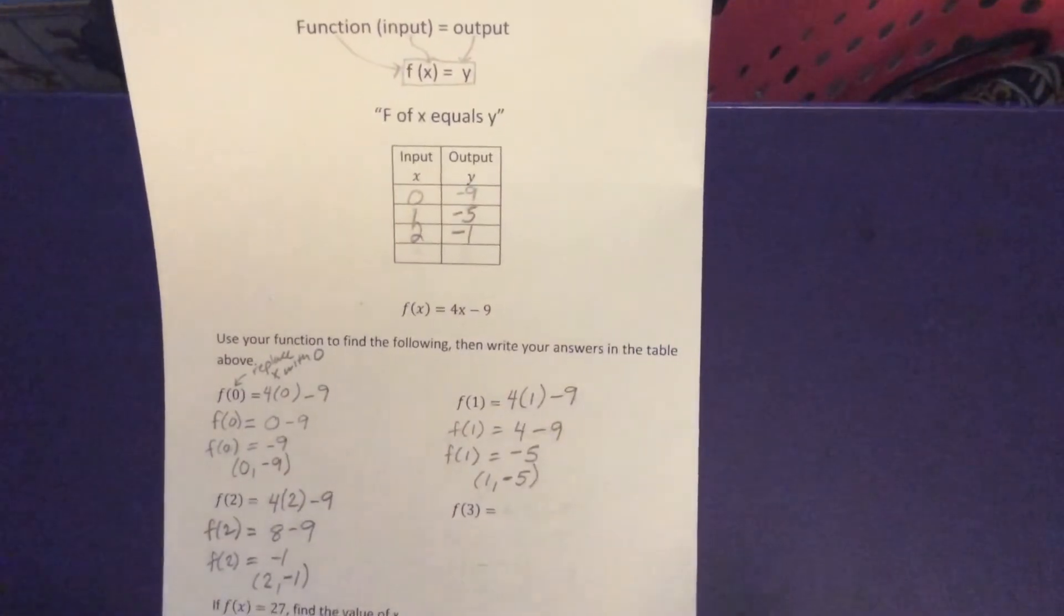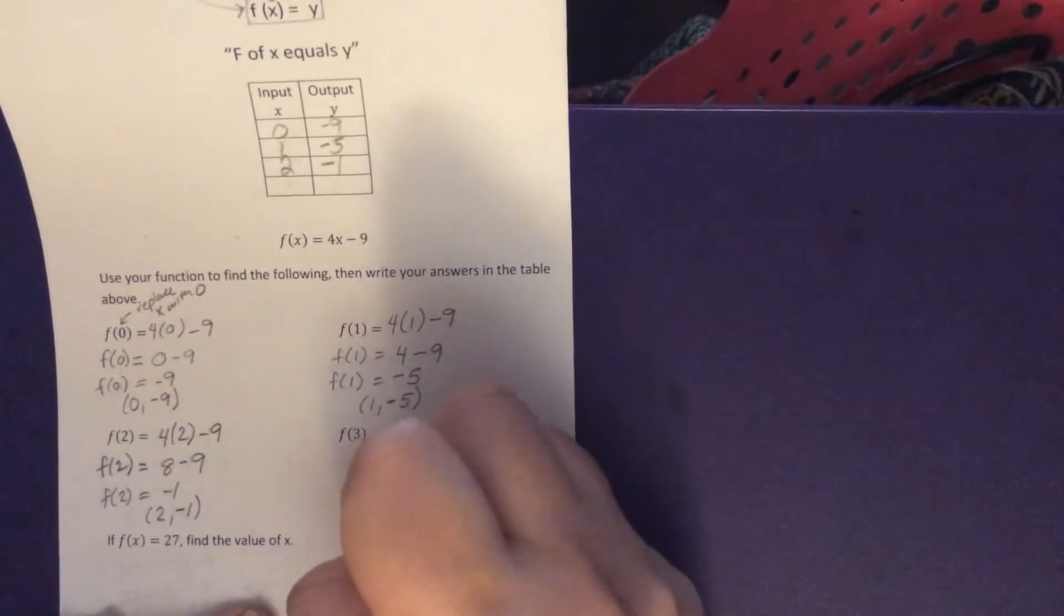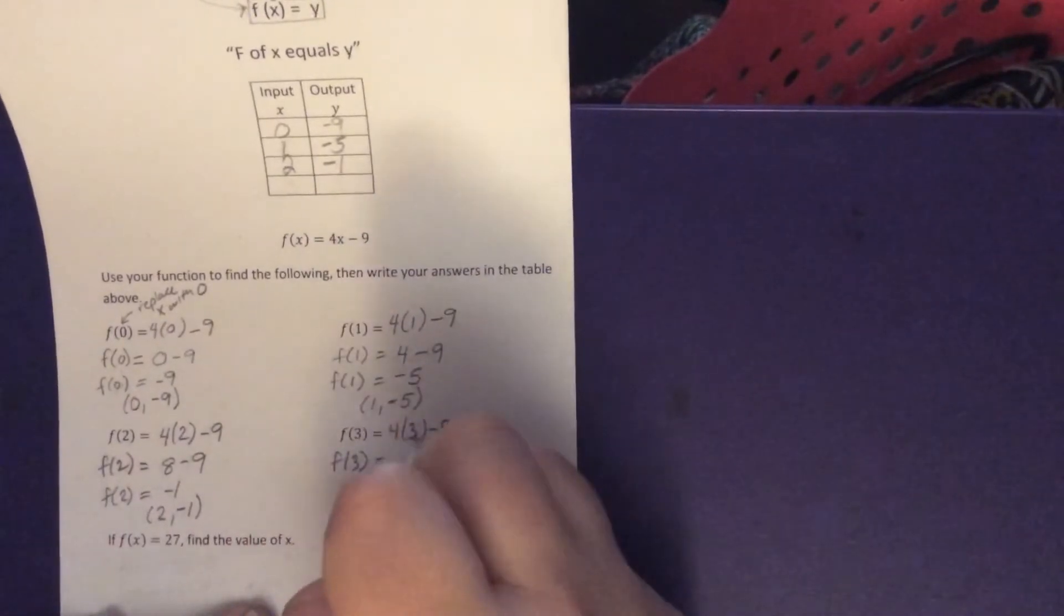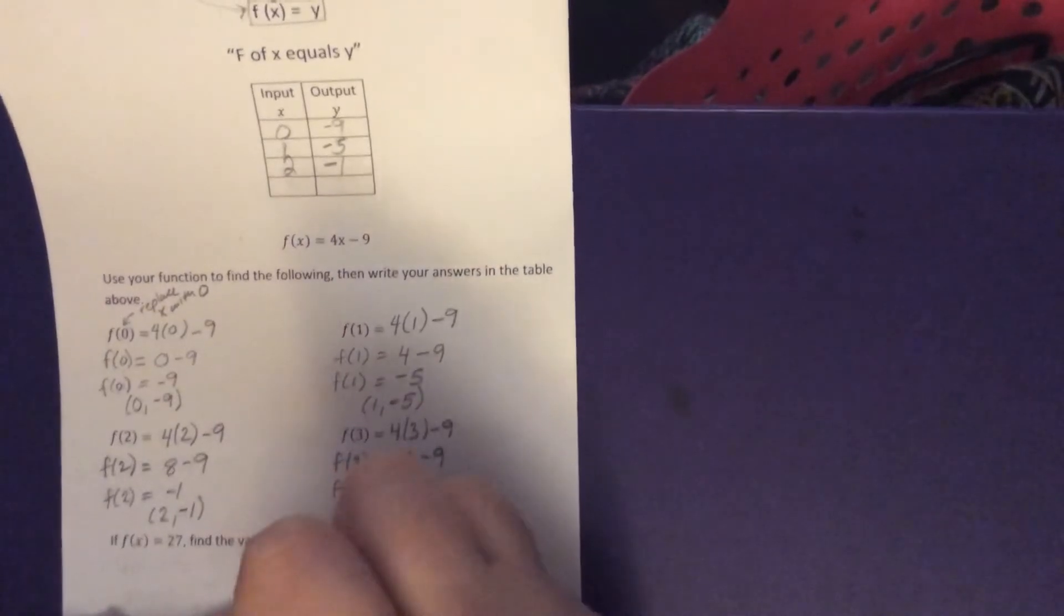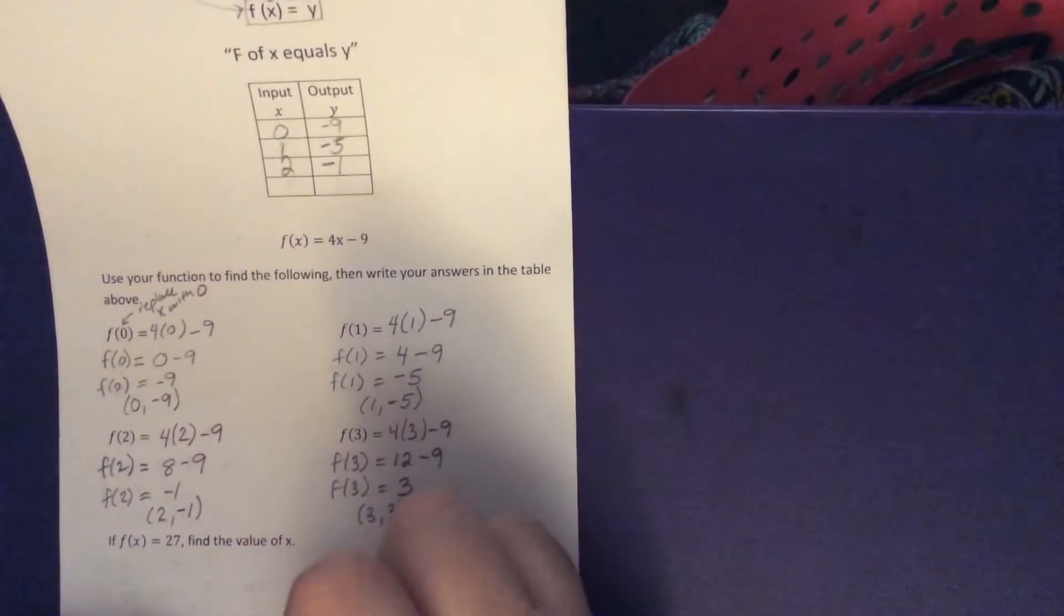If you feel like you have this feel free to pause it and try the last one on your own just to check and make sure you're doing it correctly. Alright last one. f of 3. 4 times 3 is 12 minus 9. f of 3 equals 12 minus 9 which is 3. So when an input of 3 goes in and output comes out the same. 3, 3. And that's my last ordered pair. 3, 3 for the table.